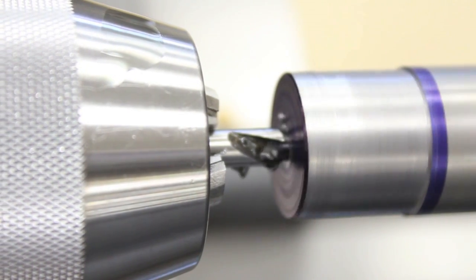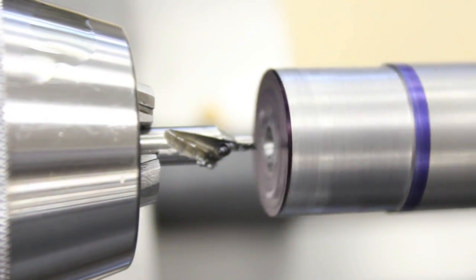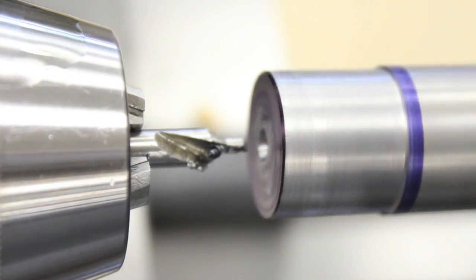Continue peck drilling until the depth is approximately half the distance of the angle of the countersink and retract. Shut down the machine and inspect your center drill and the hole that was drilled.